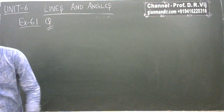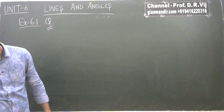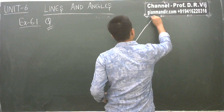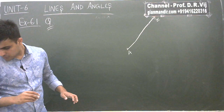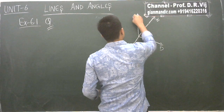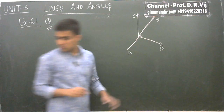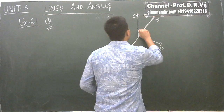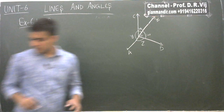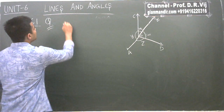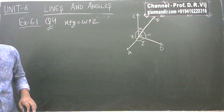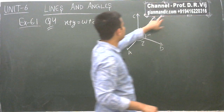Fourth question. A figure is given with a line AB, and there is a point O with rays OC, OD, OX, OY, OW, OZ. The question says: if X plus Y equals W plus Z, then prove that AOB is a line.